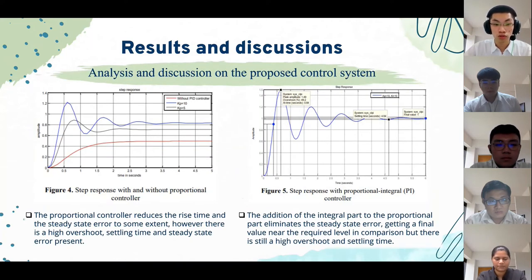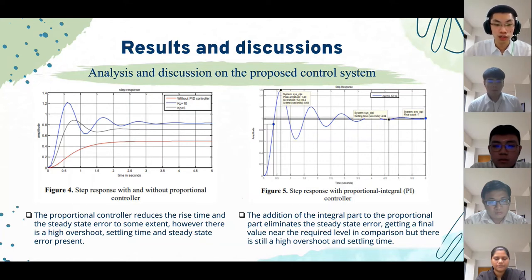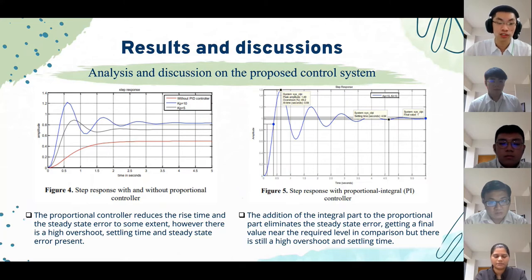In order to control water level, a variety of process control strategies are applied. The use of a proportional (P) controller reduces rise time and steady-state error compared to no controller. However, there is high overshoot, settling time, and steady-state error present. The addition of the integral part to form a PI controller eliminates the steady-state error and achieves a final value closer to the required level compared to the P controller, but there is still high overshoot and settling time.